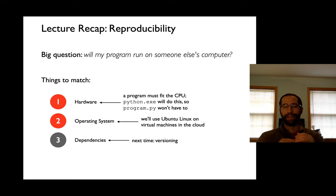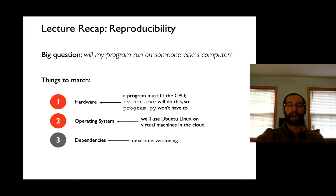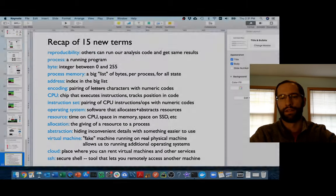So that was the first two big pieces of reproducibility — will my program run on somebody else's computer? We have a Python interpreter that helps us with the hardware, and the approach we're taking in this class is having everybody use the same operating system, Ubuntu Linux, on virtual machines. Next time, we'll talk a little bit about package dependencies. And here's a recap of all those terms we've learned — so let's move on.